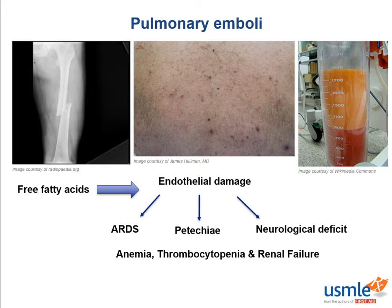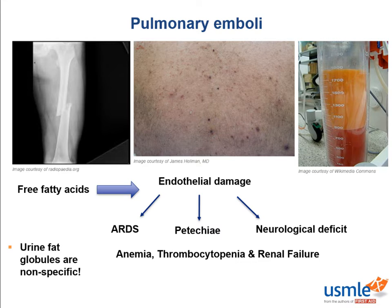One way the boards may trick you is they'll give you a trauma case and tell you that fat globules were found in the urine. But fat globules in the urine are not specific nor sensitive for fat embolism syndrome, because they may appear in the setting of any trauma.